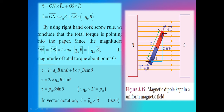Similarly, |QmB vector| = |−QmB vector|; both forces are equal but in opposite directions. The magnitude of total torque about point O, substituting the values, gives τ = L × QmB sinθ + L × QmB sinθ = 2L × QmB sinθ.